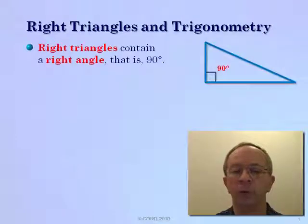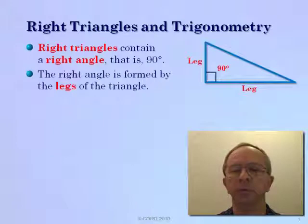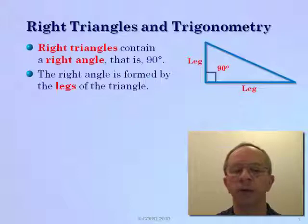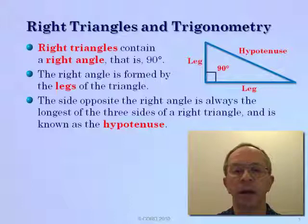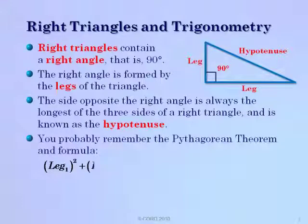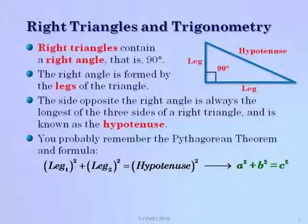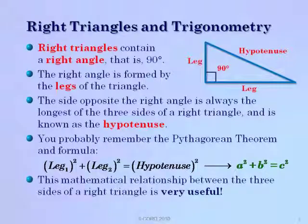Let's look at some right triangle terminology. Right triangles contain a right angle — that is, a 90 degree angle. The right angle is formed by the two legs of the triangle. The side opposite the right angle is always the longest of the three sides and is known as the hypotenuse. You'll probably remember the Pythagorean theorem: the sum of the two legs squared equals the hypotenuse squared, better known as a squared plus b squared equals c squared. This mathematical relationship between the three sides of a right triangle is very useful.